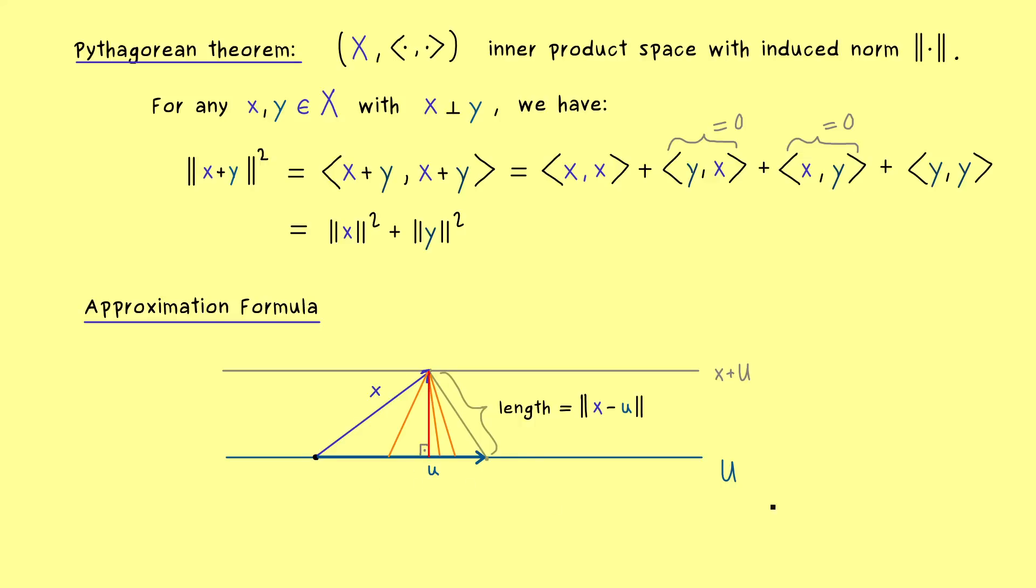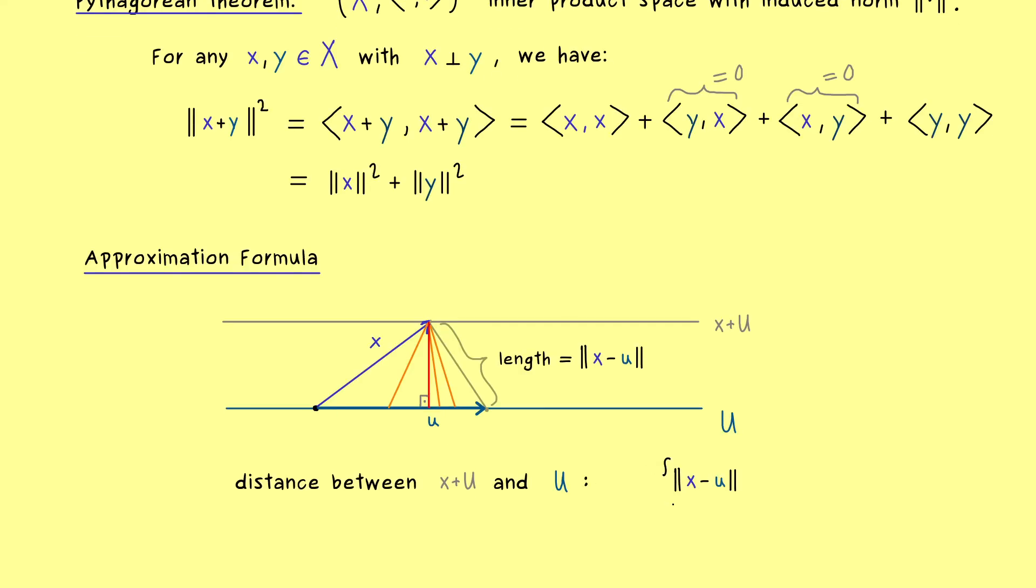And indeed, the picture suggests that this minimizer would give an orthogonal vector to U. However, this is not clear at all, because the whole thing here is just a visualization of our abstract problem. And please note the problem is not that we can calculate this distance between x plus U and U. The problem is if we can represent it by a single vector u in U. In fact, the distance is easy to define, because we can just look at the set of all possible lengths. And then we can just go with our lowercase u through all possible vectors in capital U. So this is just a subset in the real number line and the infimum exists, which defines our distance.